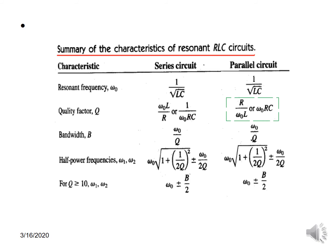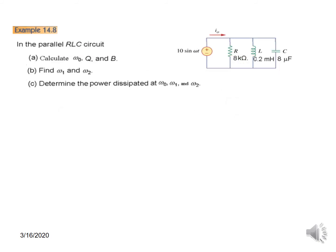Now let's solve one or two examples. These parameters are given. We have to calculate ω₀ and the Q factor and bandwidth. Also we have to find the upper and lower frequencies and determine power dissipated at these three frequencies.